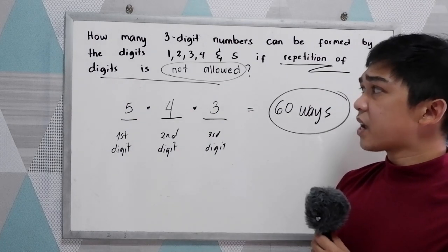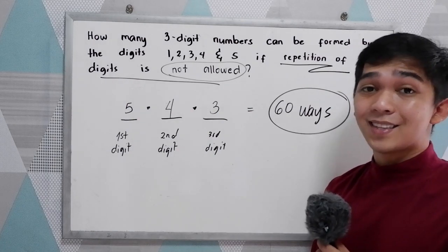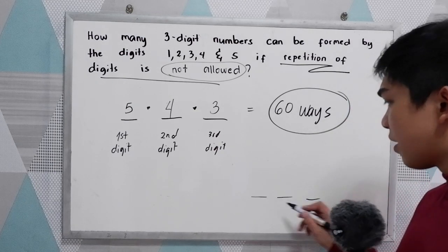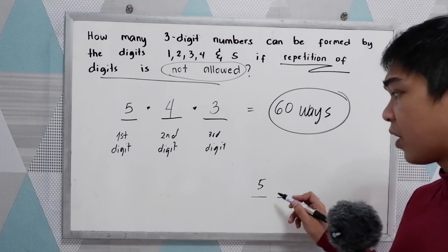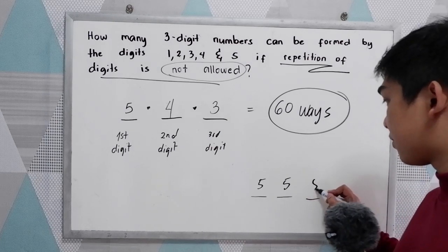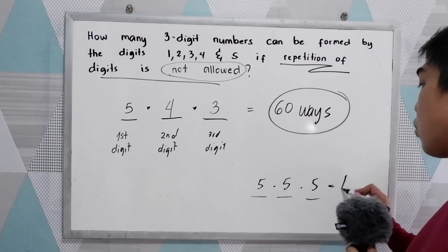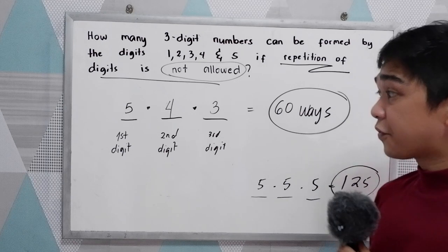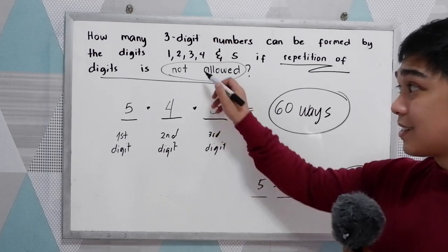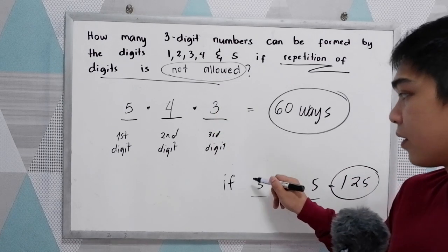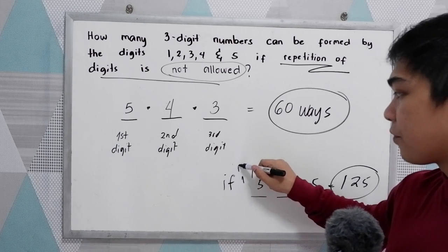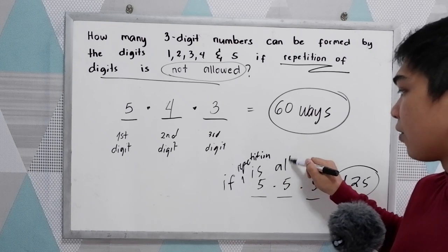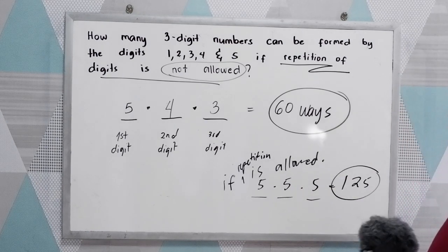What if there is a second question — if repetition of digits is allowed? So repetition of digits is allowed. That means each digit position can still be 1 through 5, so 5 times 5 times 5, which gives 125.